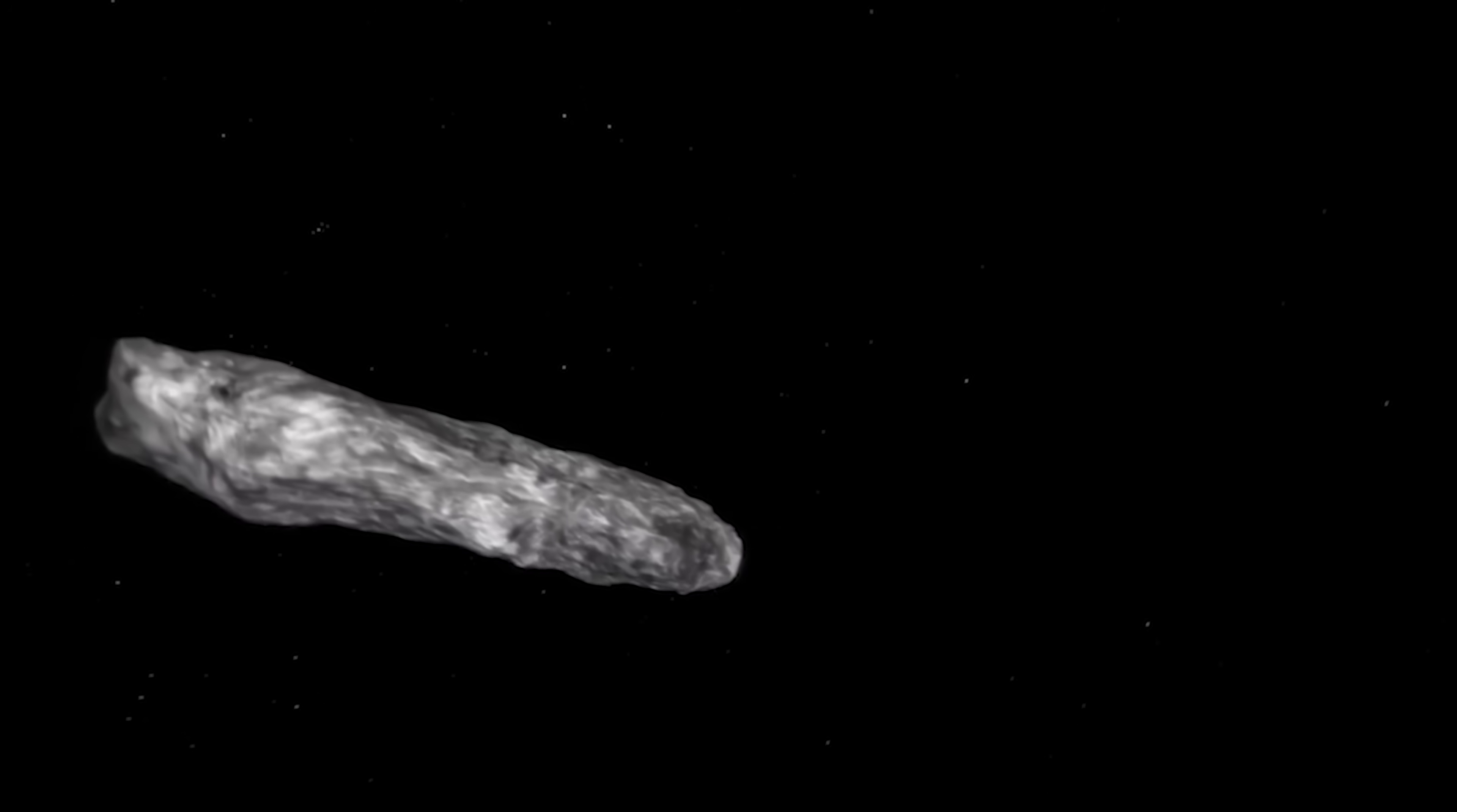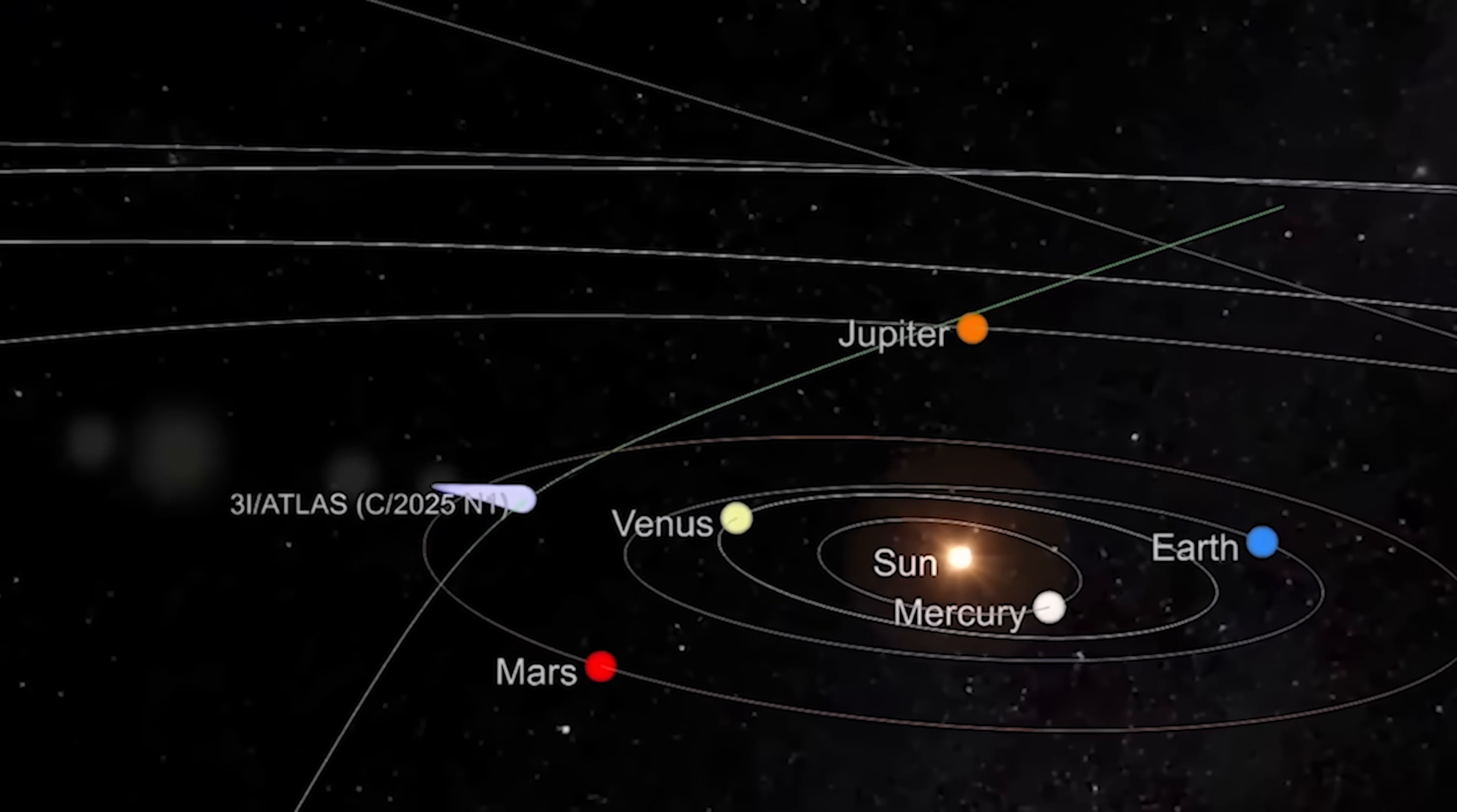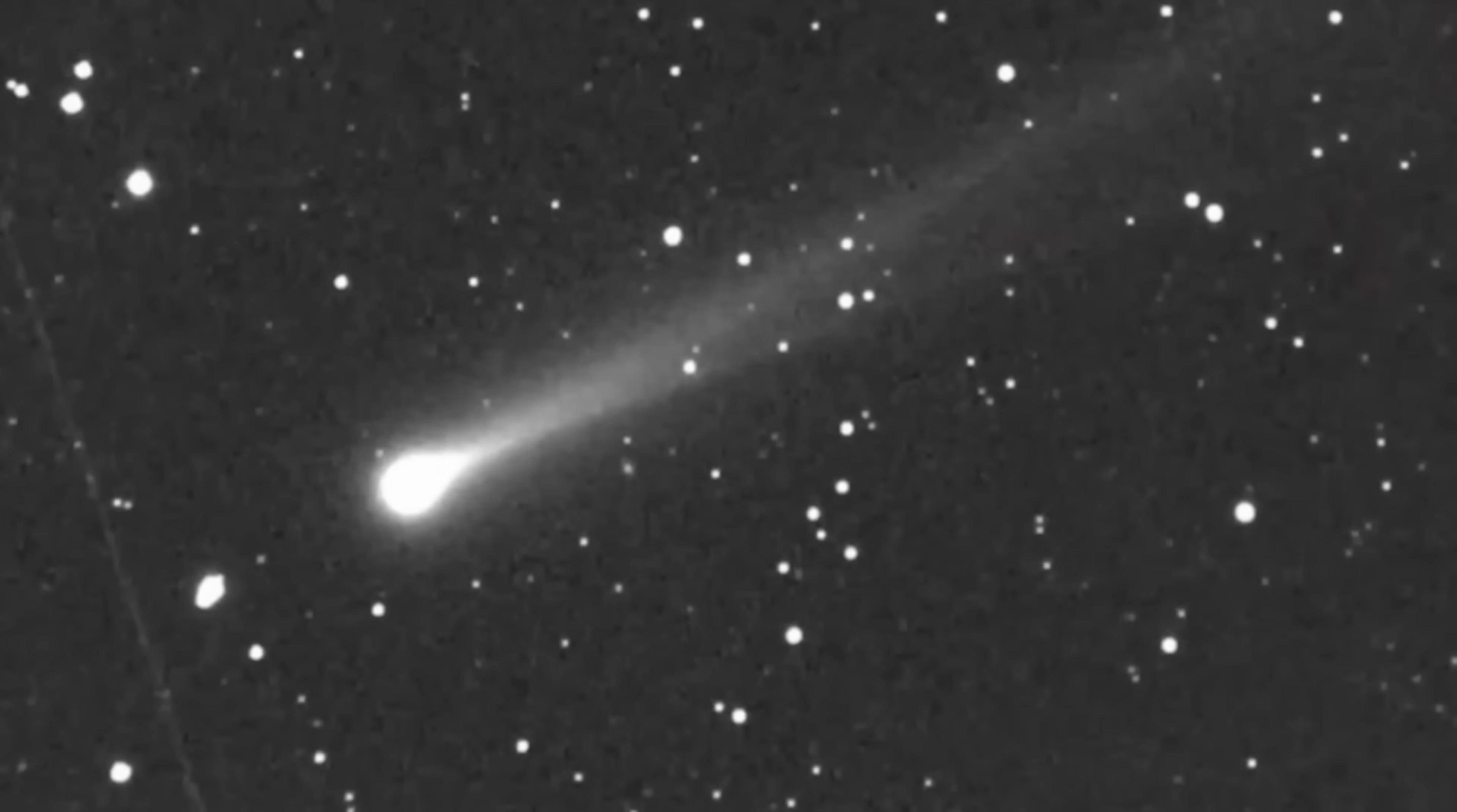For scientists, that's like finding a mysterious postcard with no return address. Avi Loeb grabs the microphone and asks the wild question everyone secretly wants to ask. What if this isn't just a comet? Loeb takes it a step further. What if Atlas is actually tech? Maybe a probe, maybe a spacecraft, maybe something designed to do exactly what it's doing. Pass through, observe, and keep us guessing. His argument? The trajectory looks suspiciously deliberate, almost as if it's been steered. Random ice ball? Or a precision-guided space tourist from an advanced civilization? That's the debate, and it forces us to rethink what we think we know about who or what might be out there.